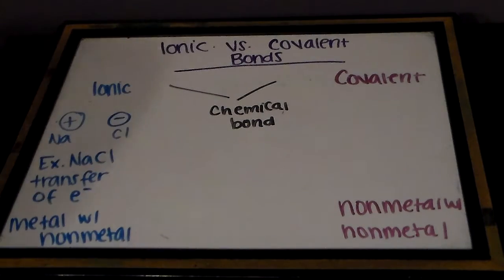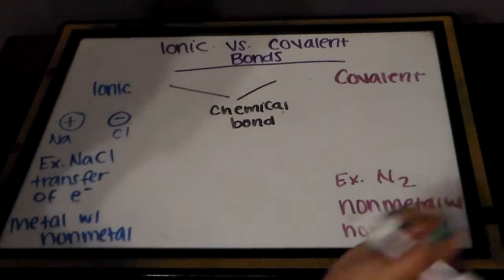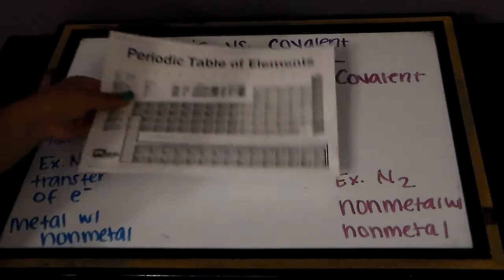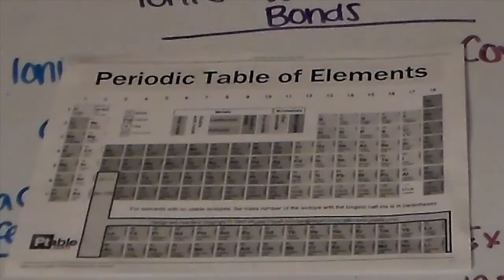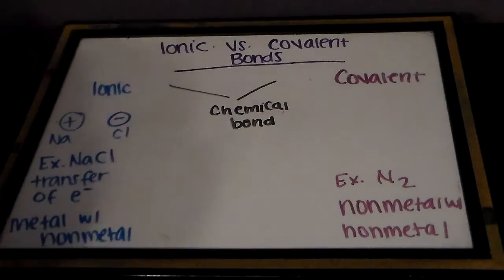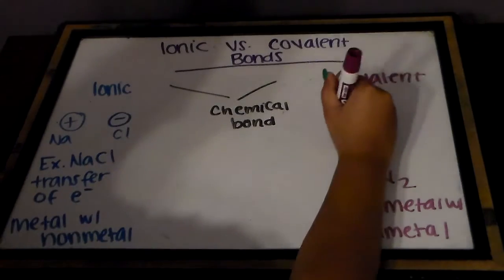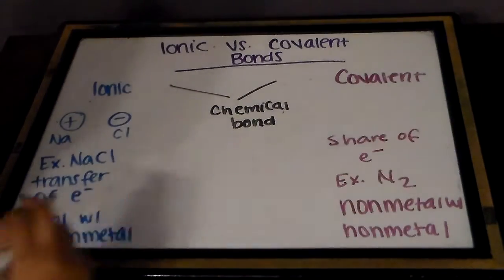An example of covalent bonding would be N2, two nitrogens. If we look at the periodic table we see that N is a non-metal, and if we have two nitrogens together those are two non-metals together. Therefore covalent bonding is two non-metals. And in covalent bonding, rather than having the transfer of electrons, we actually have electrons being shared together.